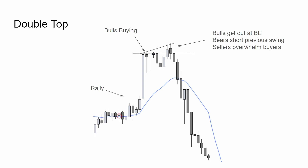Double top example. Here we have a rally — a few legs higher and a breakout. The bulls are buying highs, which we can see through these wicks. The market comes back around. The bulls that got trapped here will get out at breakeven. Bears will go short at the previous swing high and that will create more sellers than buyers.